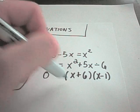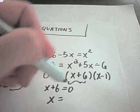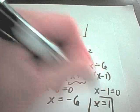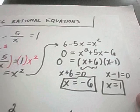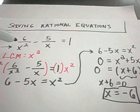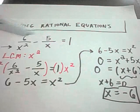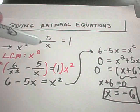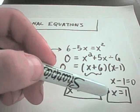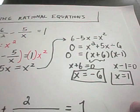We simply set each piece equal to 0. So x plus 6 equals 0 gives us x equals negative 6, and x minus 1 equals 0 gives us x equals 1. You have to be careful with rational equations — you must put the solutions back into the original equation to make sure you're not dividing by 0. Neither negative 6 nor 1 gives a 0 in the denominator, so our solutions are negative 6 and positive 1.